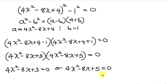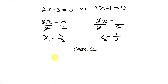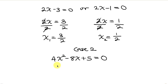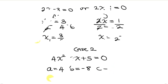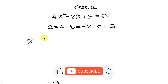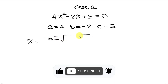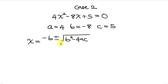Case 2 is 4x squared minus 8x plus 5 equal to 0. This equation cannot be factorized, so we're going to use the quadratic formula. Here, a is the coefficient of x squared, which is 4; b is the coefficient of x, which is negative 8; and c is the constant term, which is 5. Using the quadratic formula: x equals negative b plus or minus the square root of b squared minus 4ac, all over 2a.